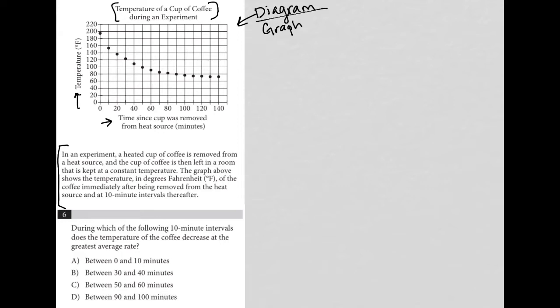All right, so basically describing everything we see here in the graph, we see our 10 minute intervals of time here: 10, 20, 30, 40, 50, 60, and so on. We obviously see our temperature and we can see that our graph trends down as that coffee is removed from the heat source,